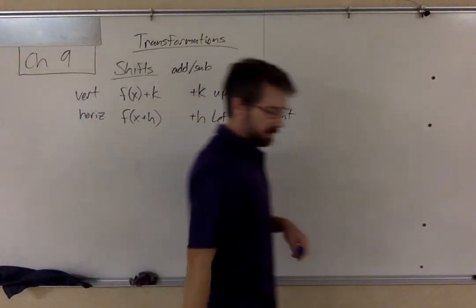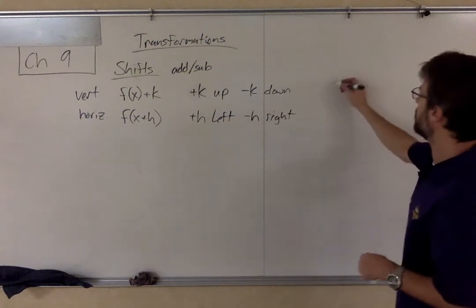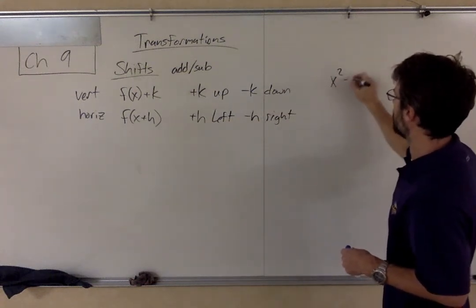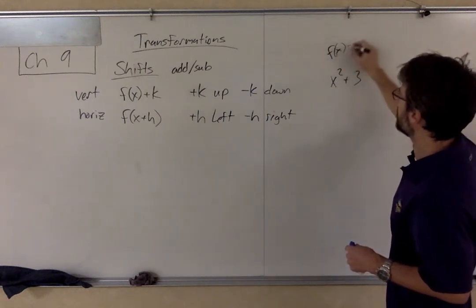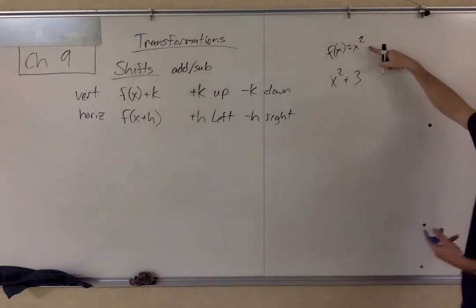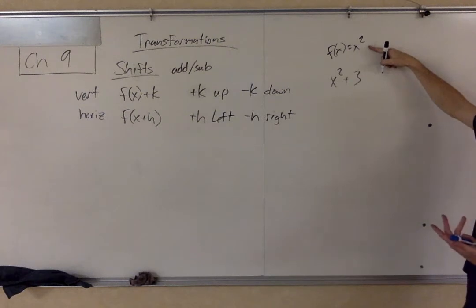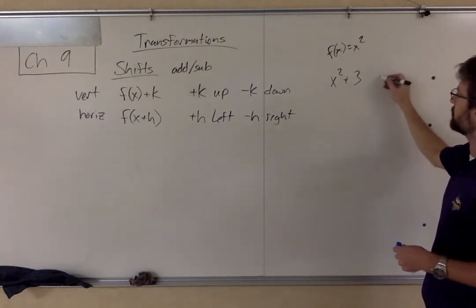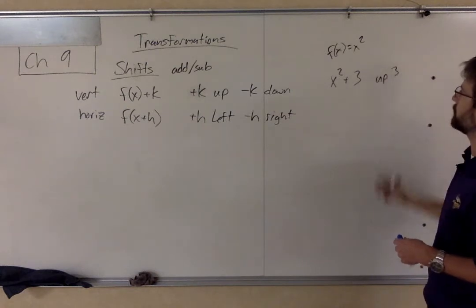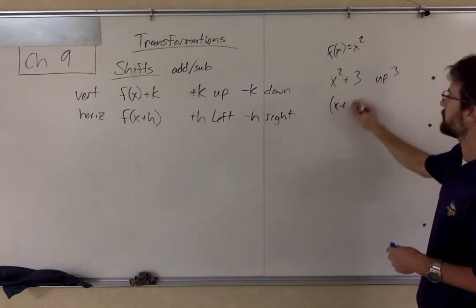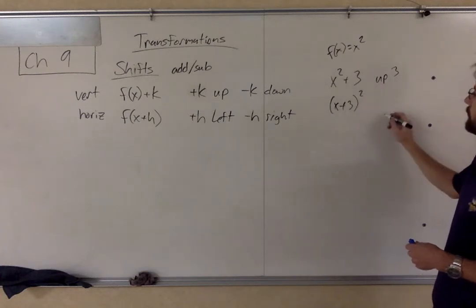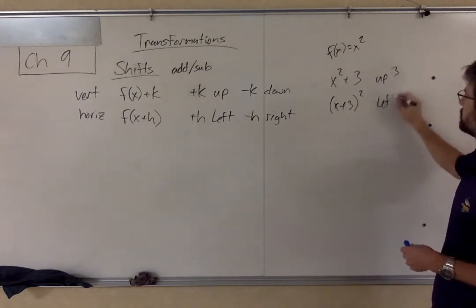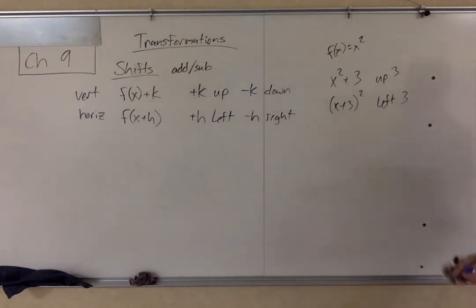Alright, so quick examples of what that would look like. Let's say I had something like x squared plus 3. So I've got f of x equals x squared is my parent equation for this. X squared plus 3, that is going to be a shift of up 3. If instead I had x plus 3 in parentheses squared, now this is a shift of left 3.